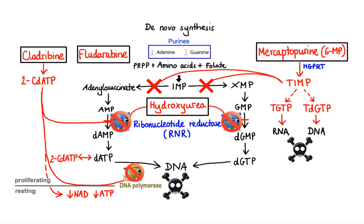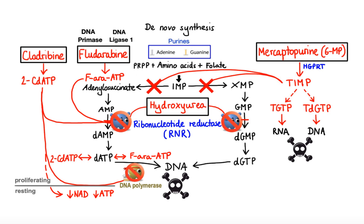Moving on to our next anti-metabolite drug, fludarabine. Fludarabine also requires conversion to the active metabolite, in this case arabinosyl 2-fluoroadenine triphosphate (F-ara-ATP). Once formed, F-ara-ATP inhibits ribonucleotide reductase and competes with dATP for incorporation into the elongating DNA strand by DNA polymerase, thus terminating DNA synthesis at the incorporation sites. Lastly, F-ara-ATP inhibits two additional enzymes crucial for DNA synthesis: DNA primase, an enzyme that synthesizes short RNA sequences called primers which serve as a starting point for DNA synthesis, and DNA ligase-1, an enzyme required for joining of short DNA fragments to create the lagging strand during DNA replication.